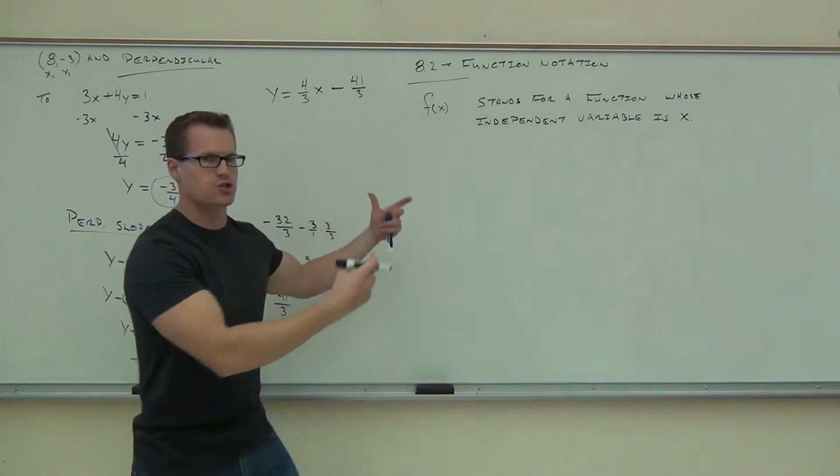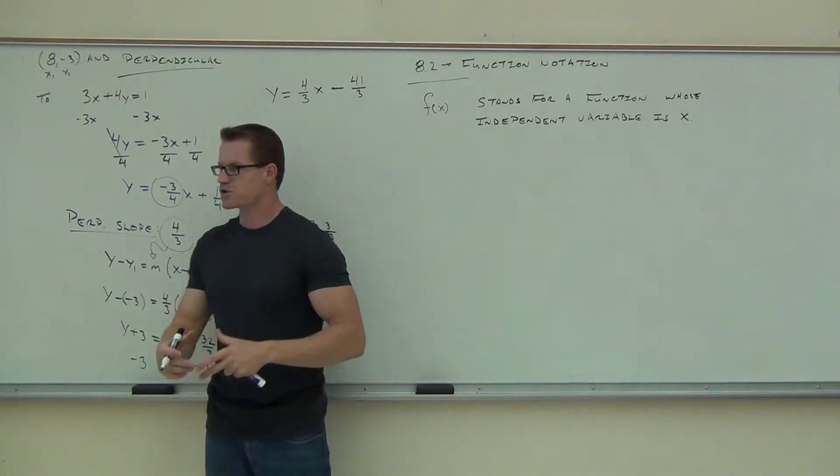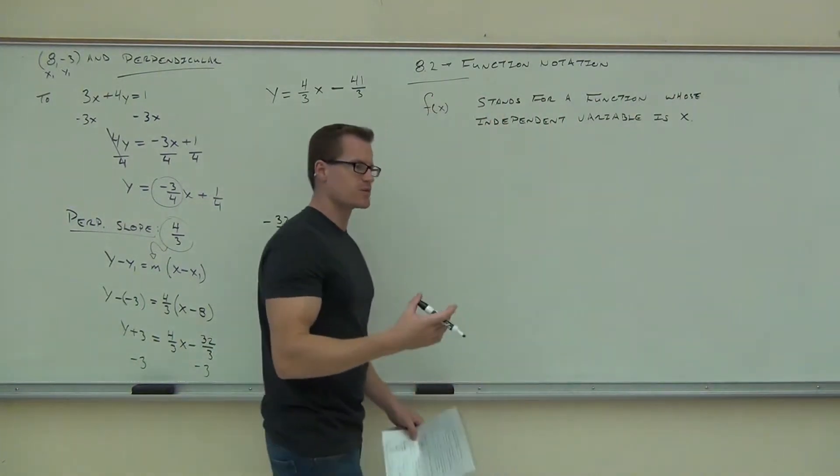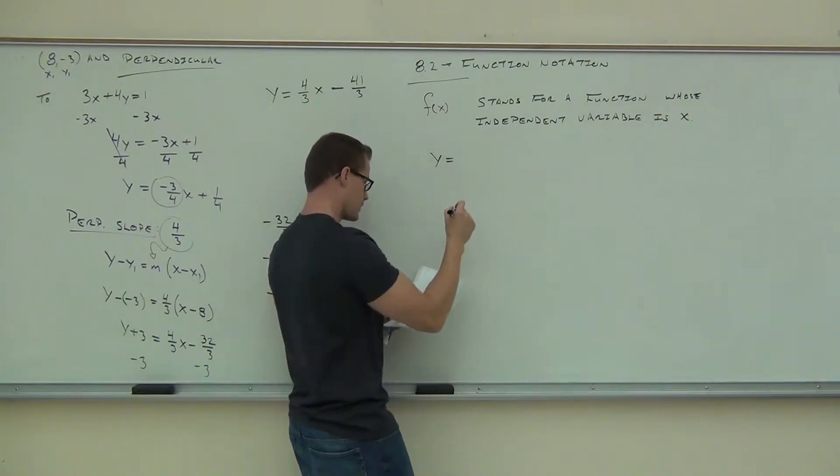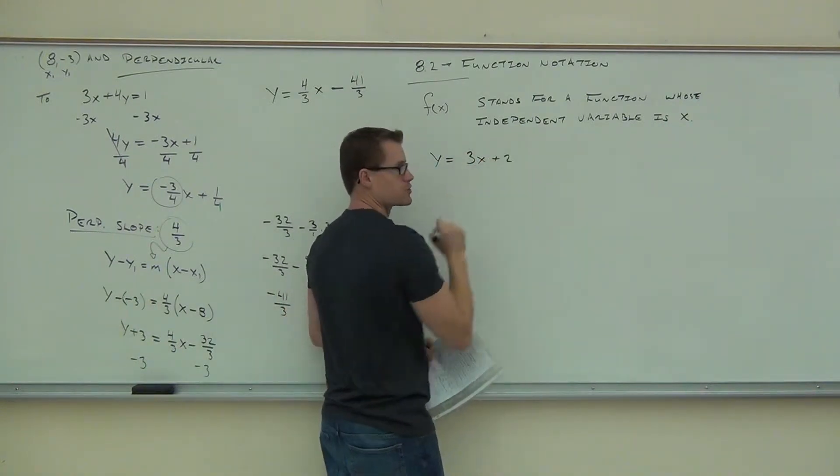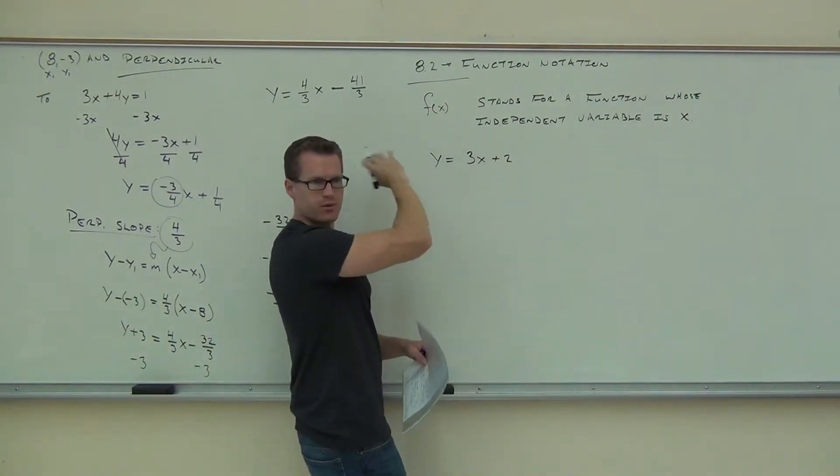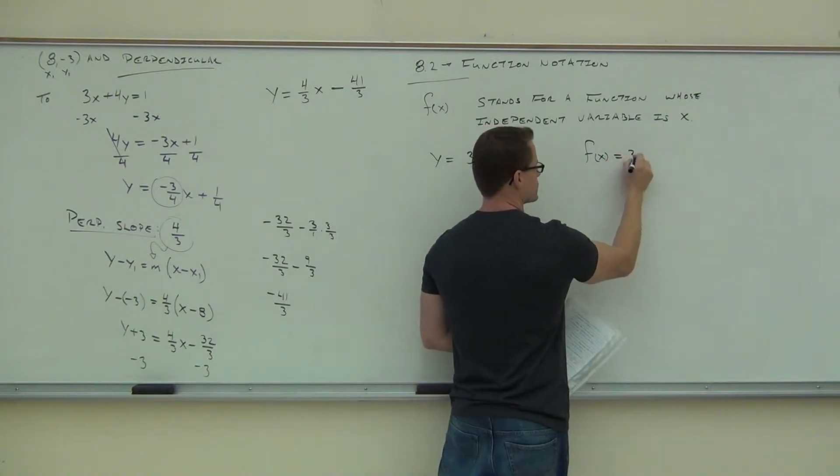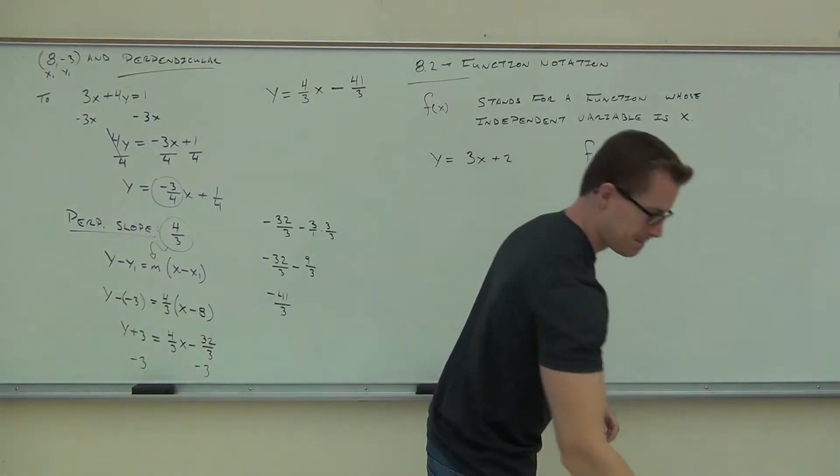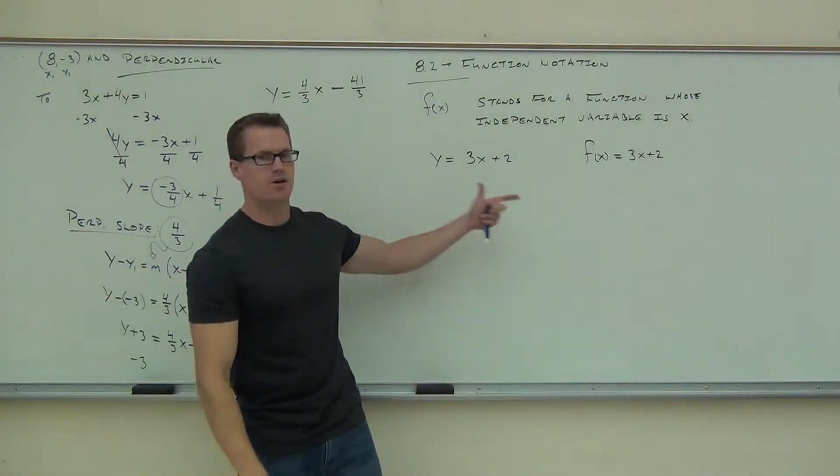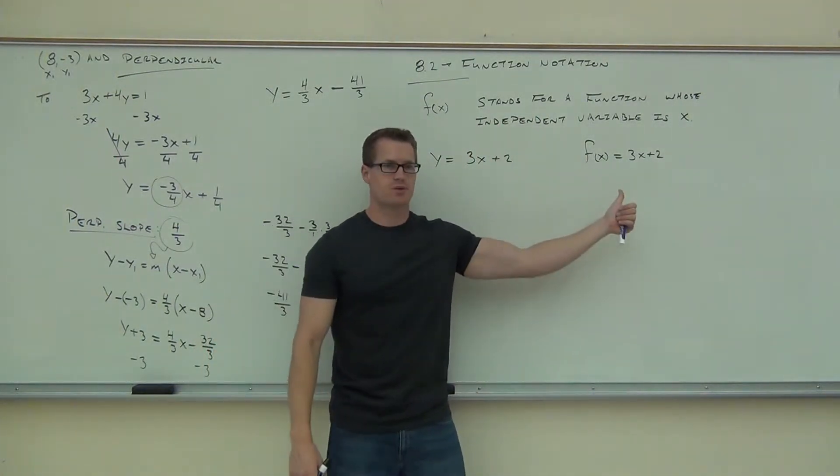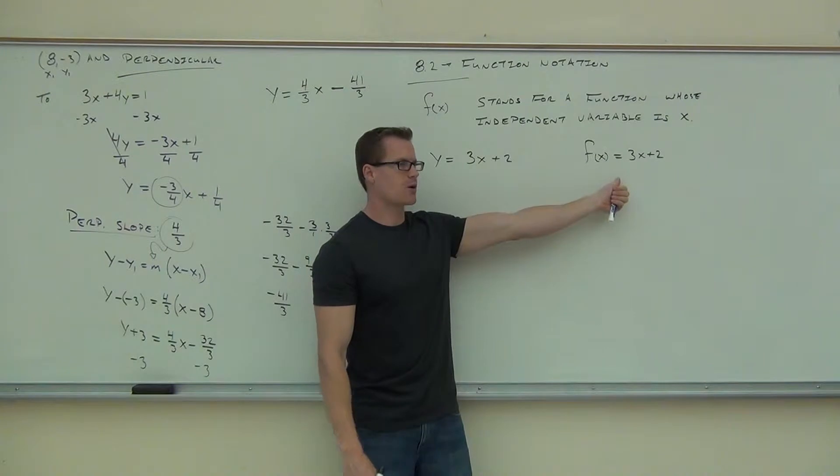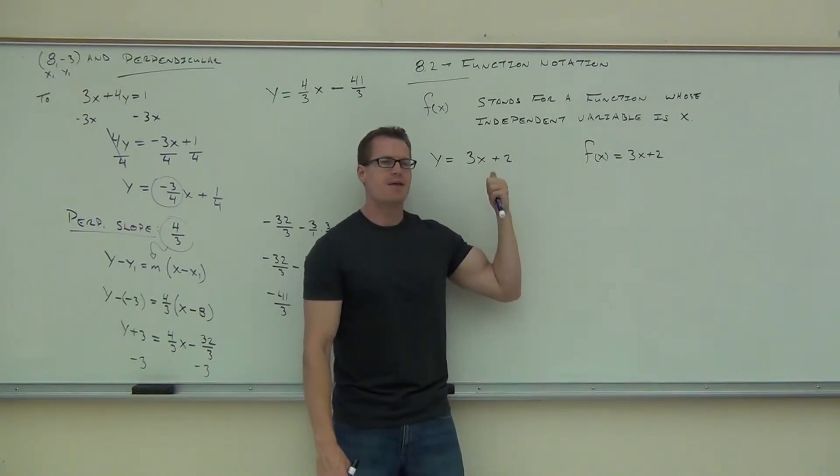So it tells you the name of the function, that's f. It tells you the variable of the function, that's x. And the reason why we use this is, we could write the same function two different ways. This is how we normally see functions. We've been dealing with this a lot: y equals 3x plus 2, or f of x equals 3x plus 2. These two things right here are exactly the same. If you graph this one and you graph this one on a graph, you would get the same looking line.